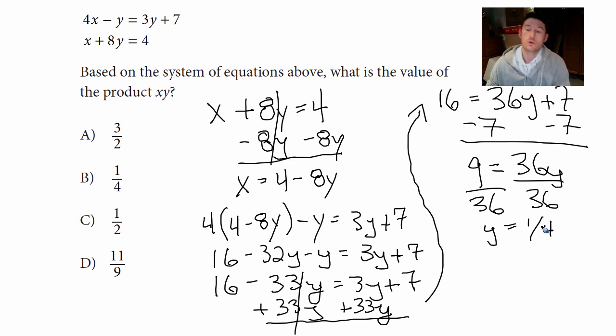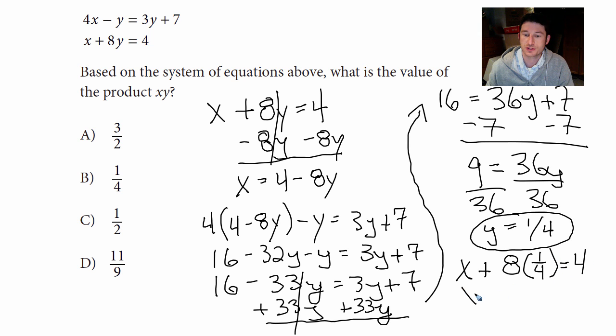Okay. So now that I have a quarter here, I'm going to circle it because that's what my Y equals. We need to find X. Well, how do I do that? I can just take this information and plug it into the second equation here. So X plus 8 times a quarter equals 4.